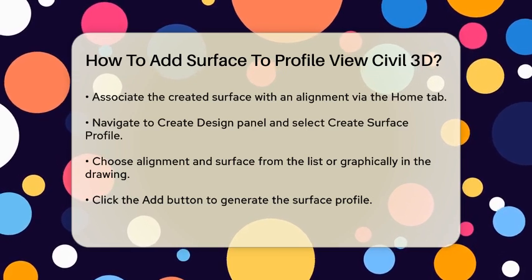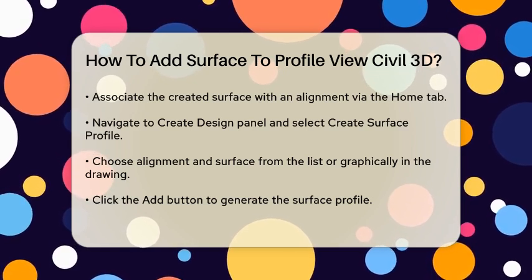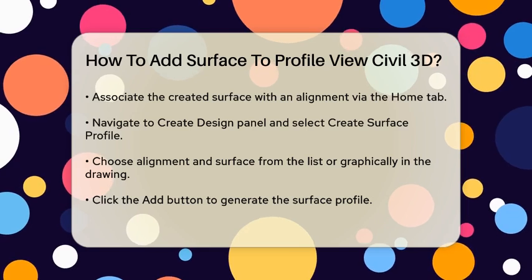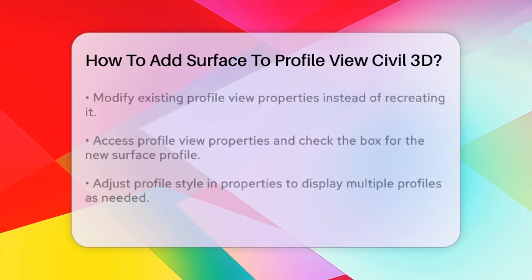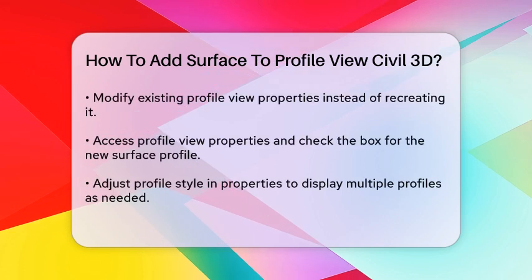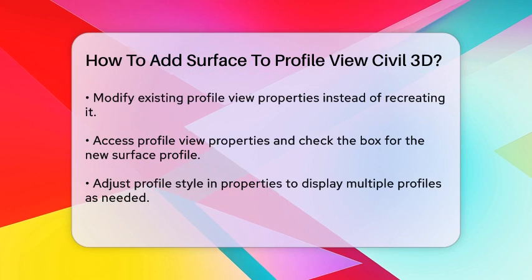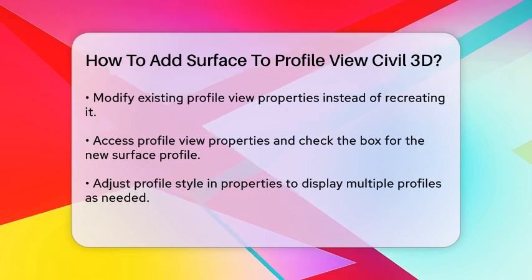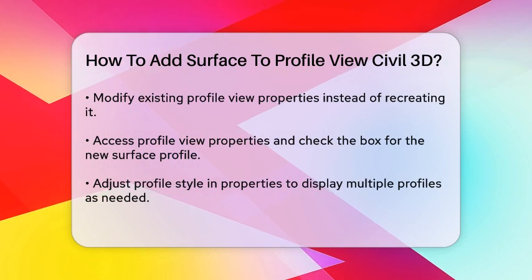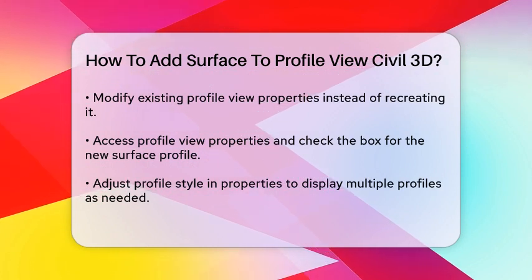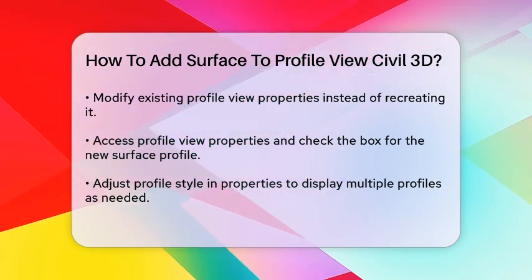Now, to add the surface to an existing profile view, you don't need to recreate the entire profile view. Instead, you can modify the existing profile view properties. Go to the profile view you want to update, and in the profile view properties, there is a tab for profiles associated with the alignment. Here, you can check the box to display the new surface profile, adding it without having to recreate the profile view from scratch.